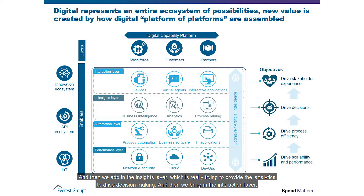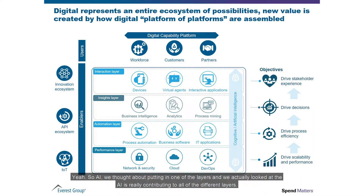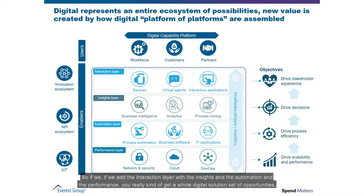Then we add in the insights layer, which is really trying to provide the analytics to drive decision-making, and then we bring in the interaction layer. I'm glad you don't have just AI as one little box — I've seen so much of that, like 'here's our AI box,' because it seems like it's all of it. We actually looked at AI as really contributing to all of the different layers. So if you add the interaction layer with the insights, automation, and performance, you really get a whole digital solution set of opportunities.